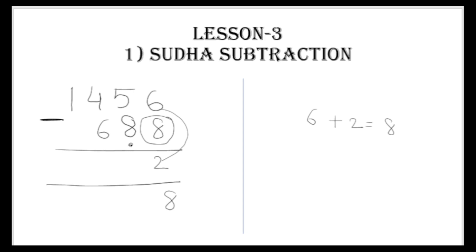Now, since we took the complement, we give a 'Sudha' — meaning we carry one — to the next column. So eight plus one becomes nine. Again, the lower number is bigger than the upper number, so we take the tenth complement of nine, which is one. We add five and one to get six.